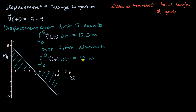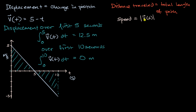Now you might start to appreciate the difference between displacement and distance traveled. If you're talking about the total length of path, you don't care as much about direction. So instead of thinking about velocity, what we would do is think about speed. Speed, in this one-dimensional case, is equal to the absolute value of velocity. In multiple dimensions, it would be the magnitude of the velocity function, which is what the absolute value function does in one dimension.